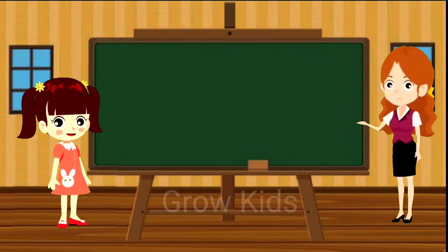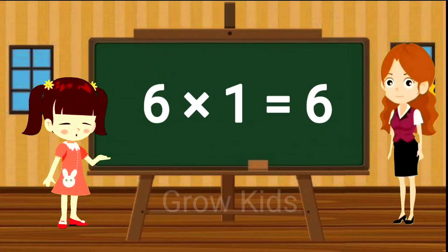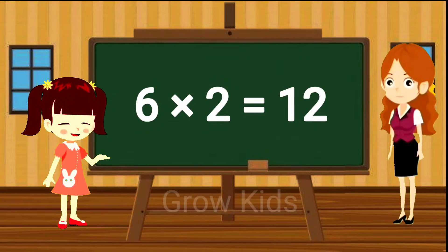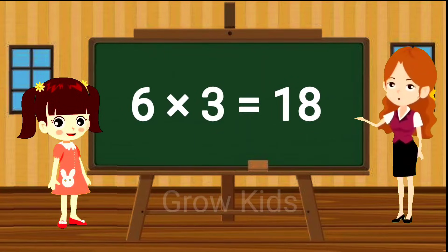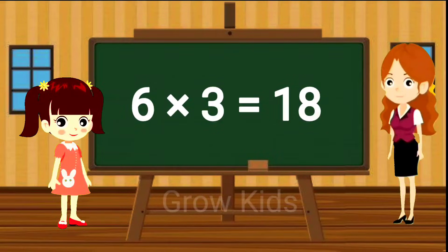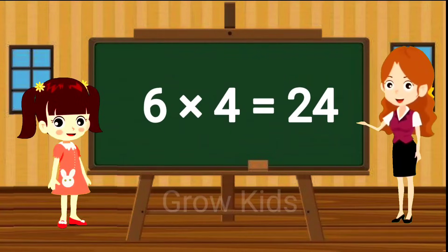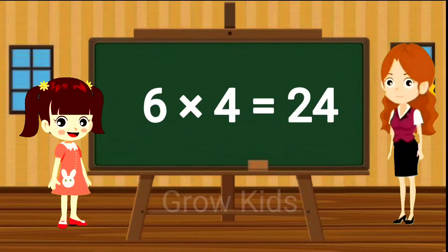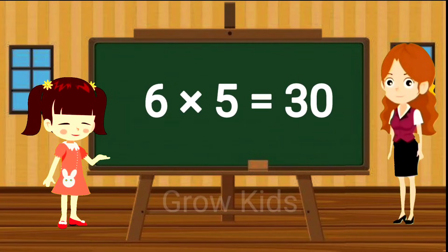Six ones are six. Six twos are twelve. Six threes are eighteen.